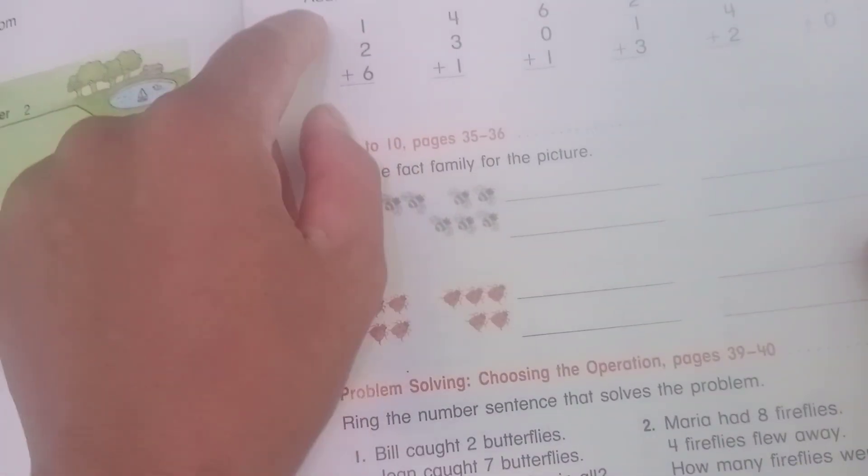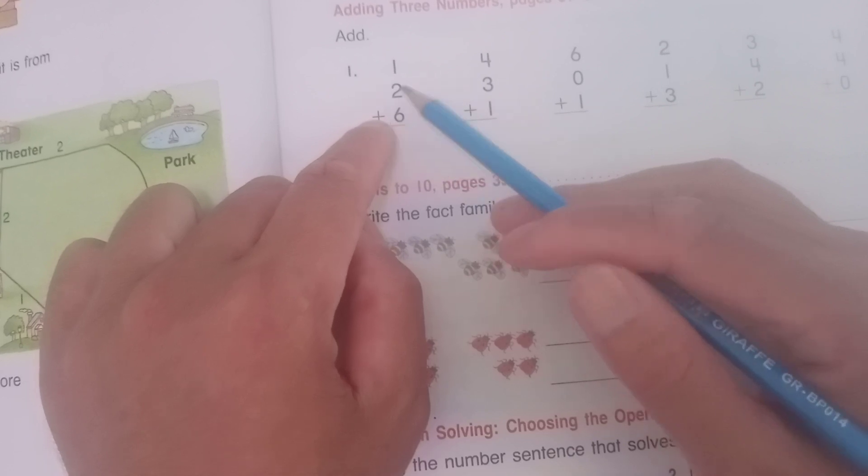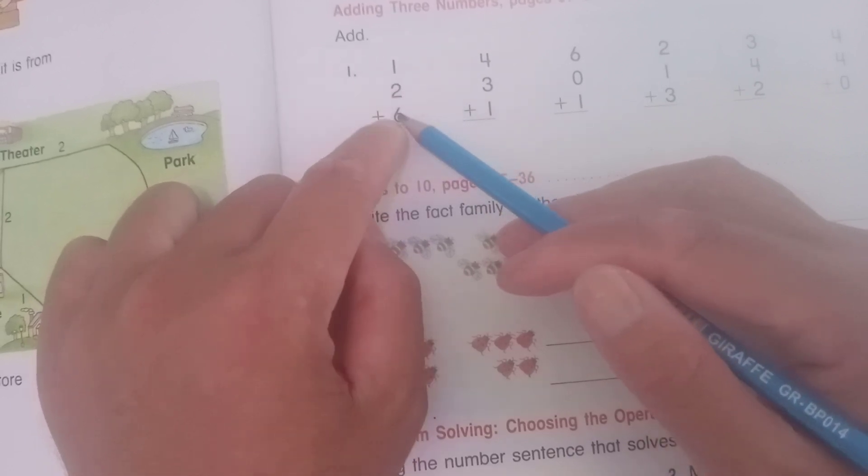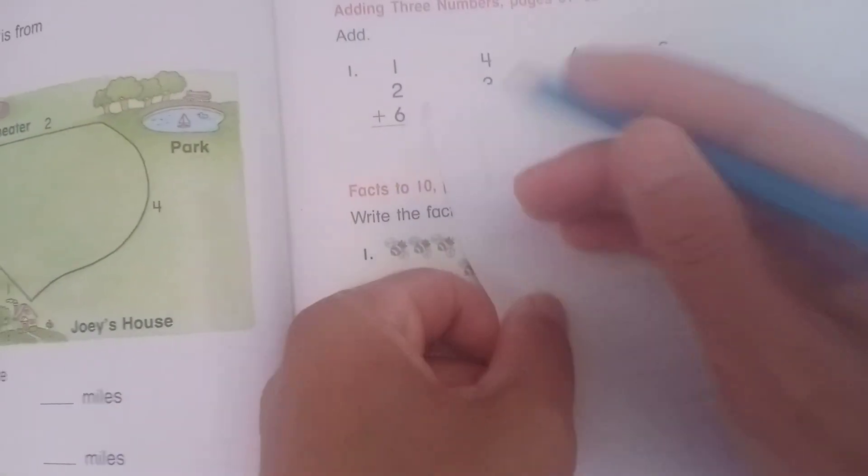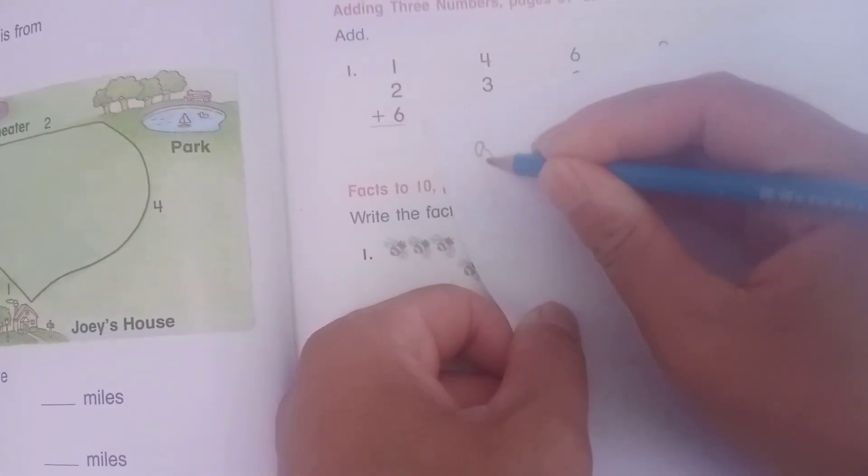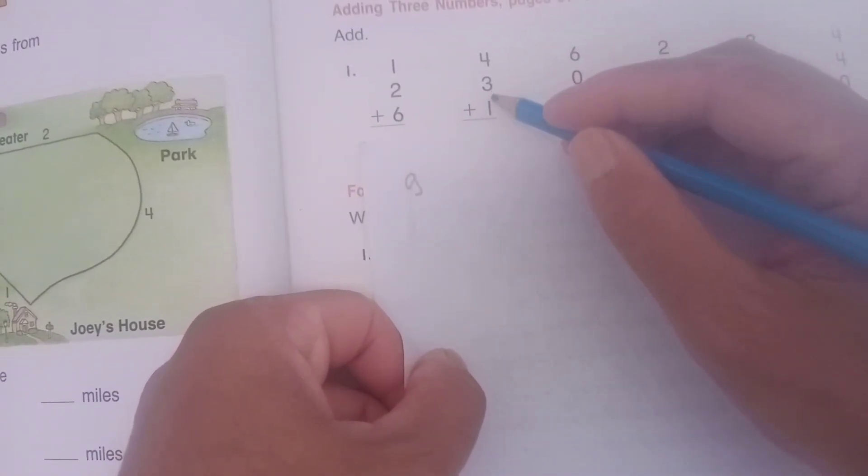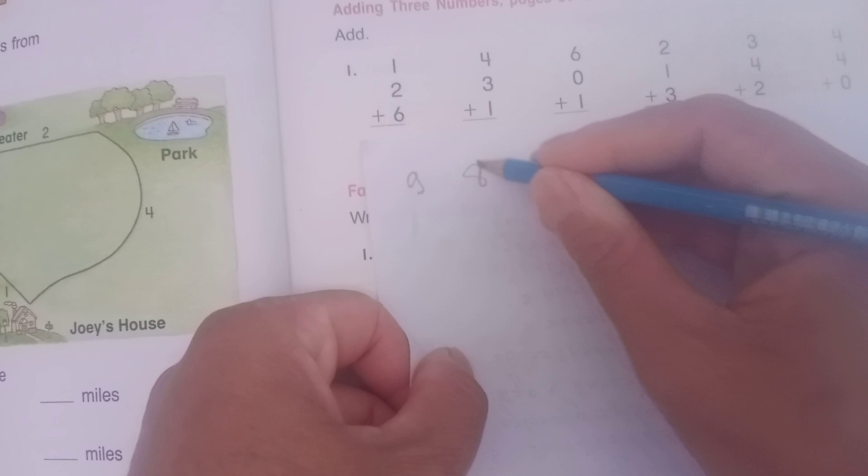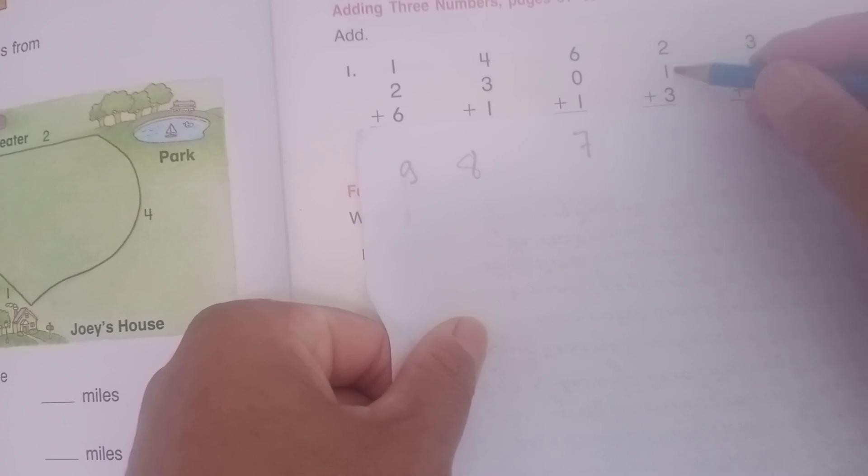Okay, so now 1+2=3, 3 plus what equals 9? So you can write right here, number one is nine. And so now 4+3=7, 7+1=8.